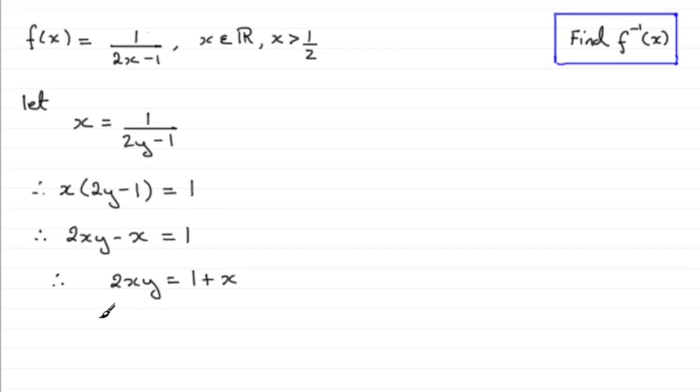And then divide both sides by 2x. So therefore y equals 1 plus x all divided by 2x. And obviously you could have 1 over 2x plus 1 half, if you did break this down further. But I think it looks better just having it as one term here.